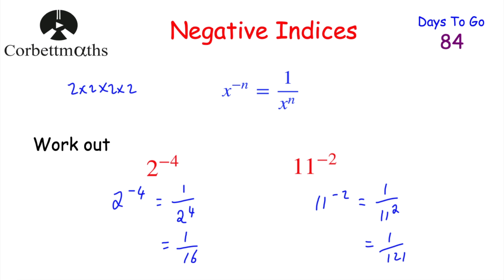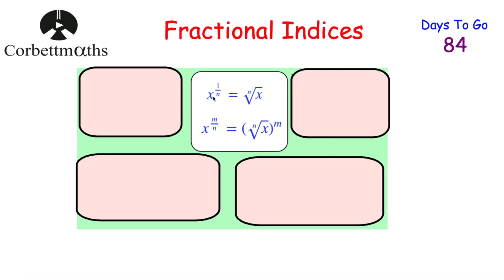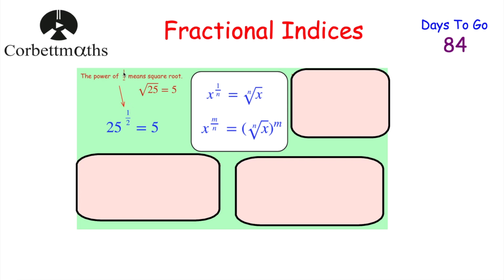Now let's look at fractional indices. If you have x to the power of 1/n, you take the nth root. For example, x to the power of 1/2 means square root of x; x to the power of 1/3 means cube root of x; x to the power of 1/4 means fourth root. So 25 to the power of 1/2 = √25 = 5. Similarly, 36 to the 1/2 is 6, 49 to the 1/2 is 7, 100 to the 1/2 is 10.